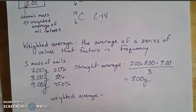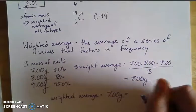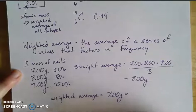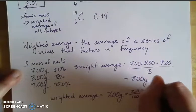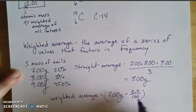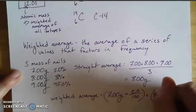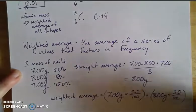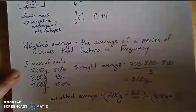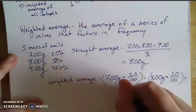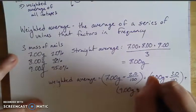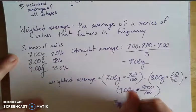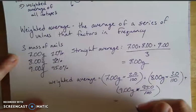The weighted average is the mass times the frequency for each isotope, summed together. So: 7 grams × (2/100), plus 8 grams × (3/100) — which is the same as multiplying by 0.02 and 0.03 respectively — plus 9 grams × (95/100). You can express the percentage either as a decimal or as a fraction, they mean the same thing.